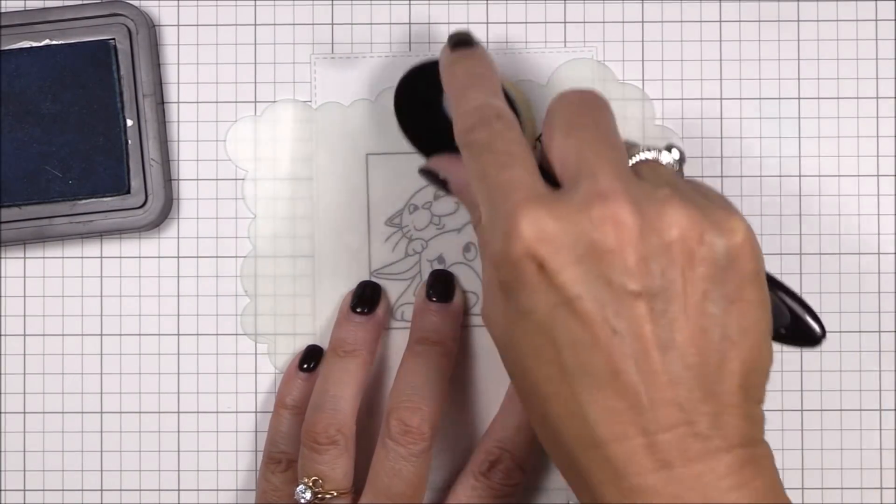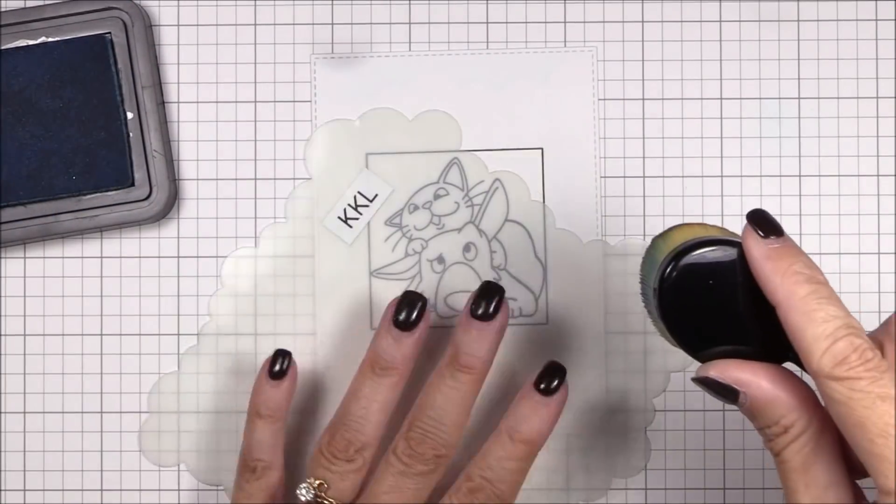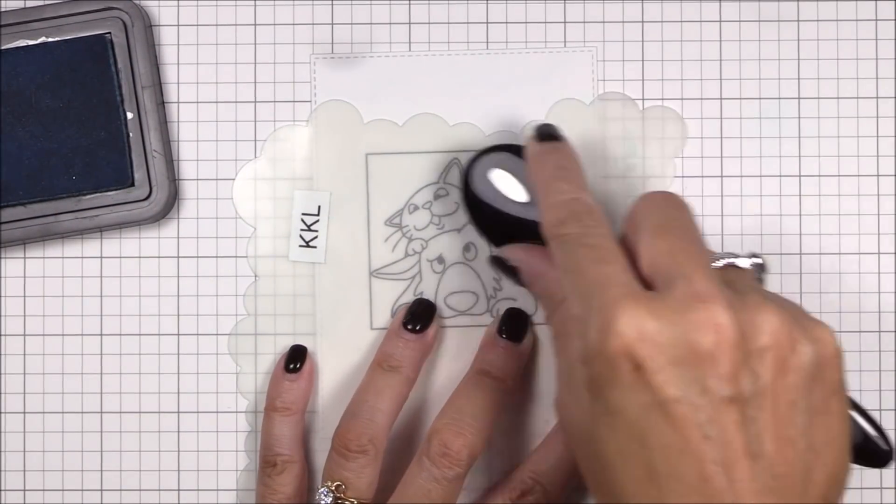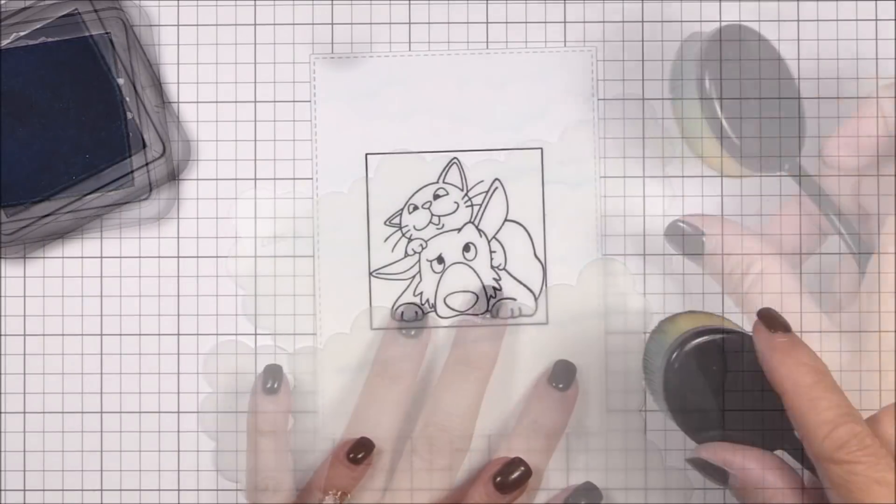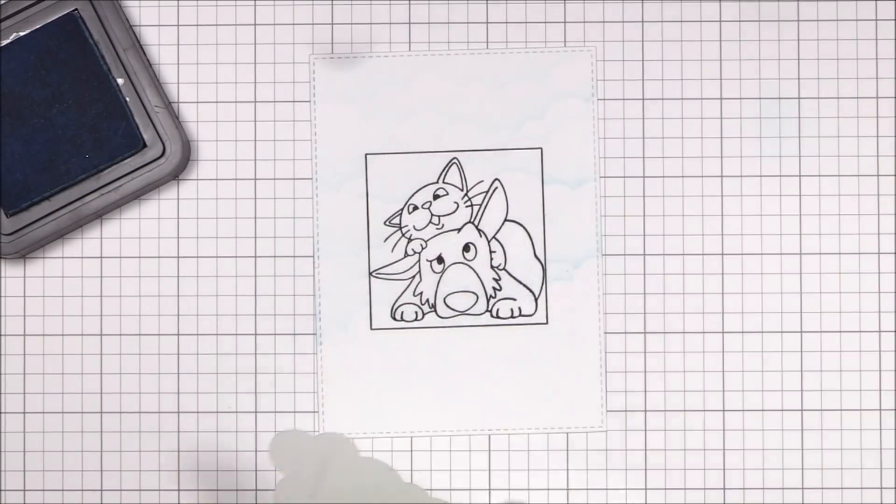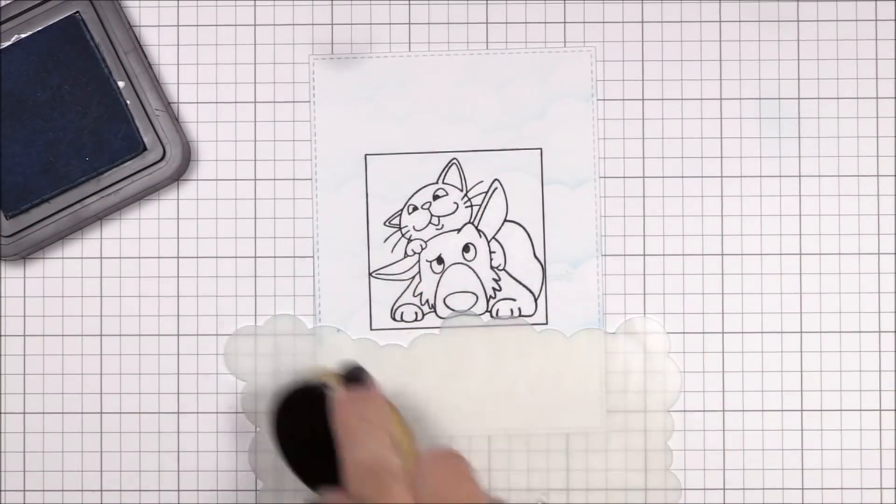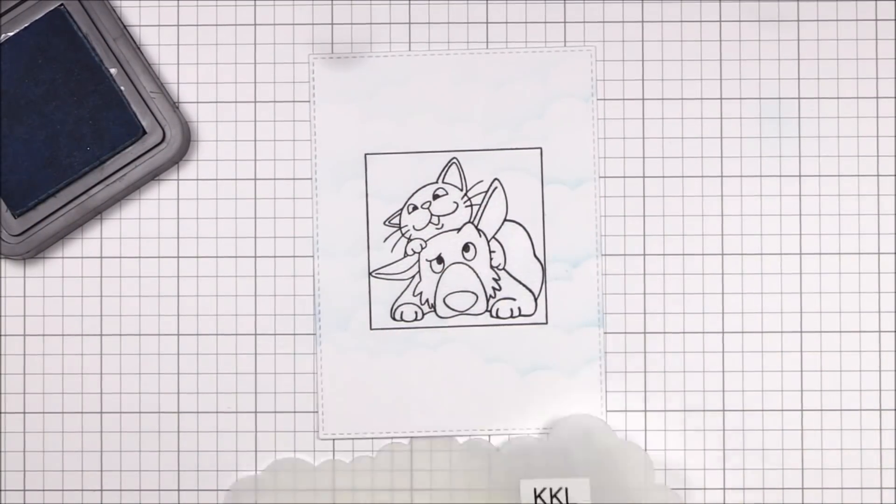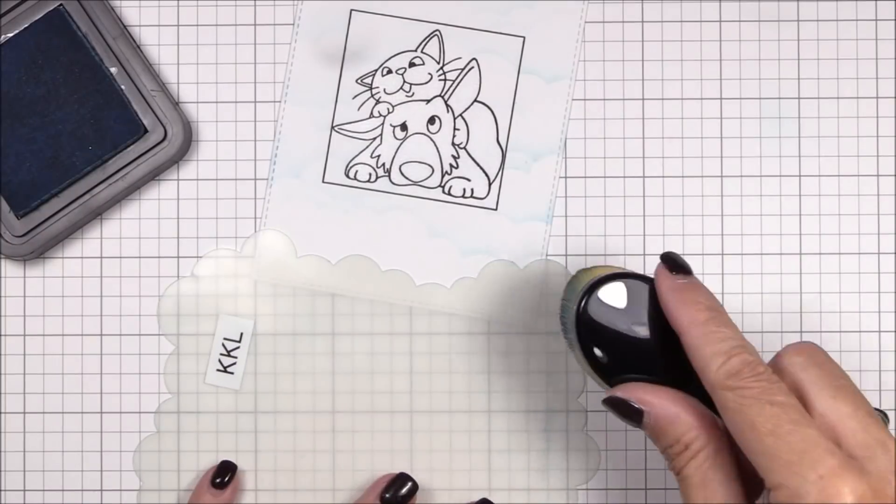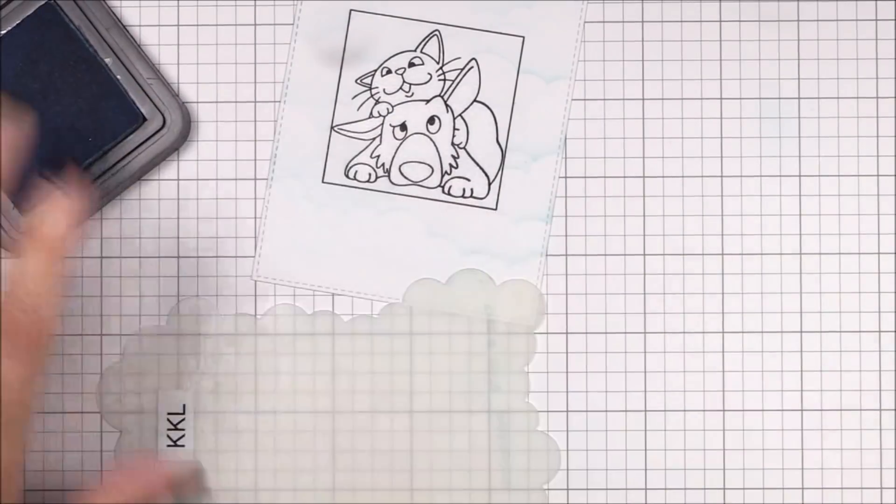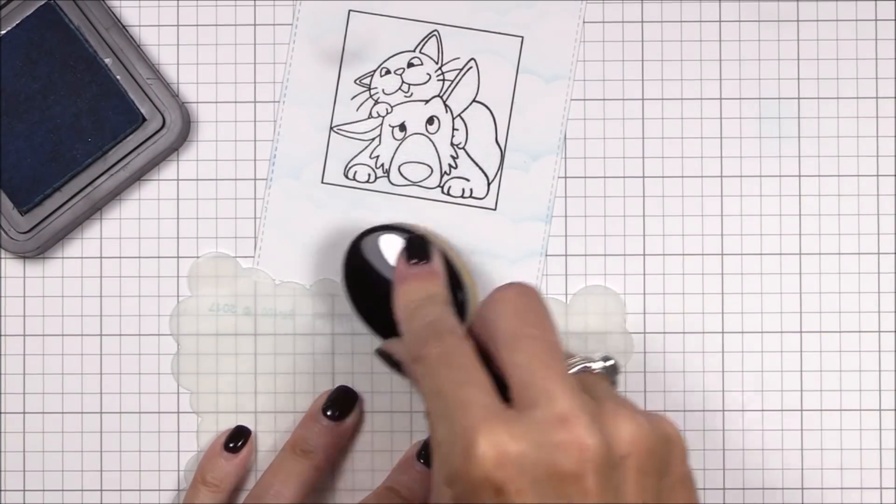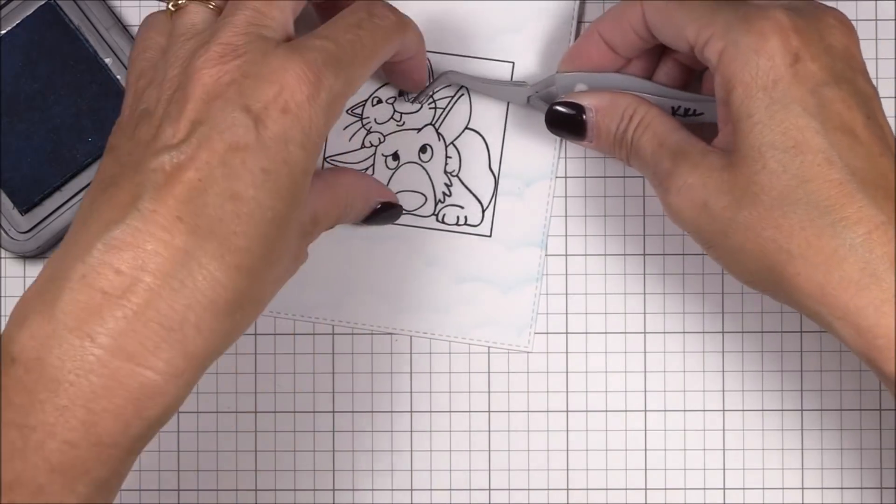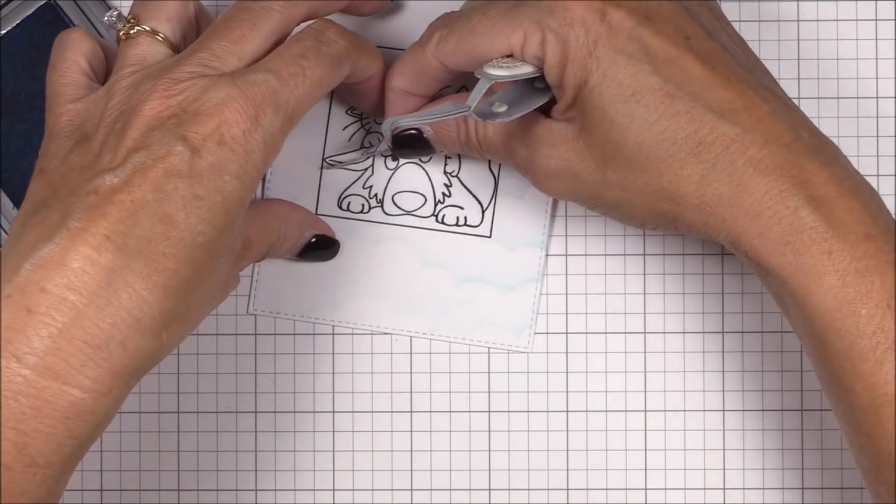I'm using tumble glass distress ink and a mini cloud edges stencil to blend some fun clouds in the background and I'm using my new life-changing blending brush. Oh my goodness who knew that a brush could be so magical. It blends ink like a dream. I'll never go back to my old ink blending foam tools. I just load the brush with color and blend away and it comes out perfectly every single time.